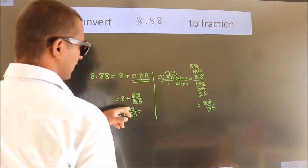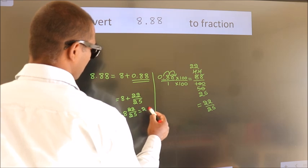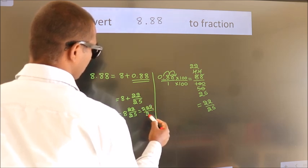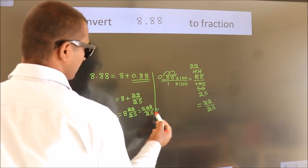In mixed form, 200 plus 22. 222 by 25 is our fraction.